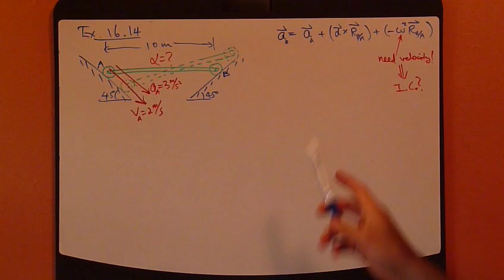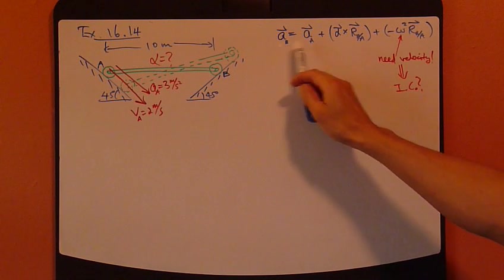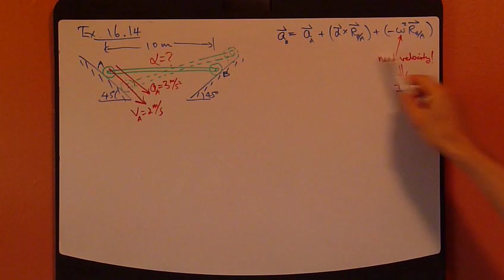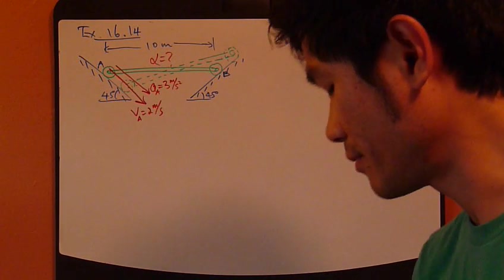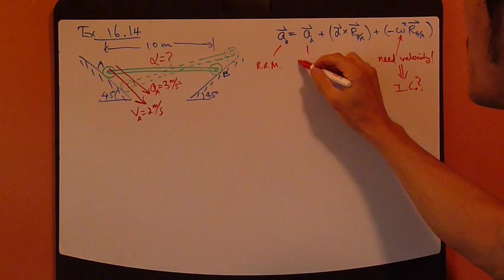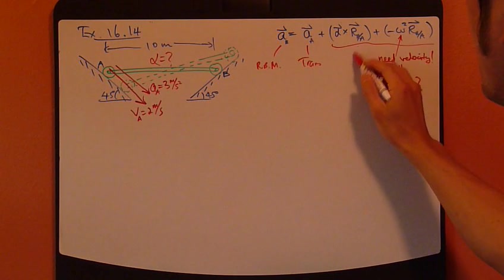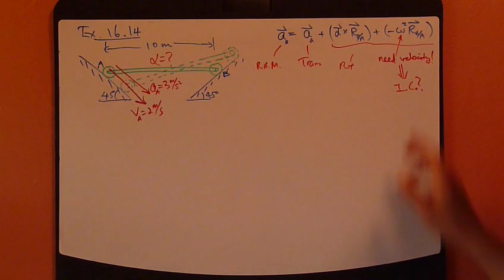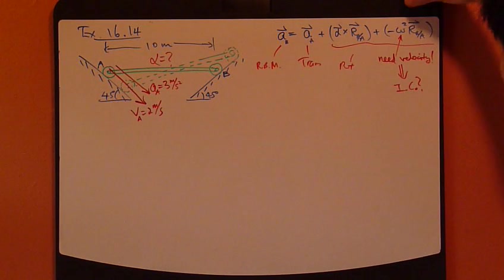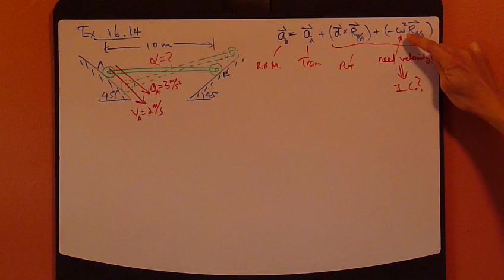You have to find the angular acceleration at this very instance. So once again, AB equals AA plus this pure rotation term. So this is rigid body motion, general motion. This is the translation part. And then the whole thing is the rotation part. But looking at this equation, we recognize that we need an angular velocity.